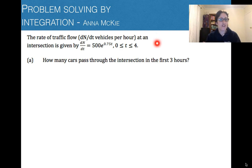The rate of traffic flow represented by dN/dt vehicles per hour at an intersection is given by this function here. So it's an e function with a domain between zero and four, and that would be four hours.